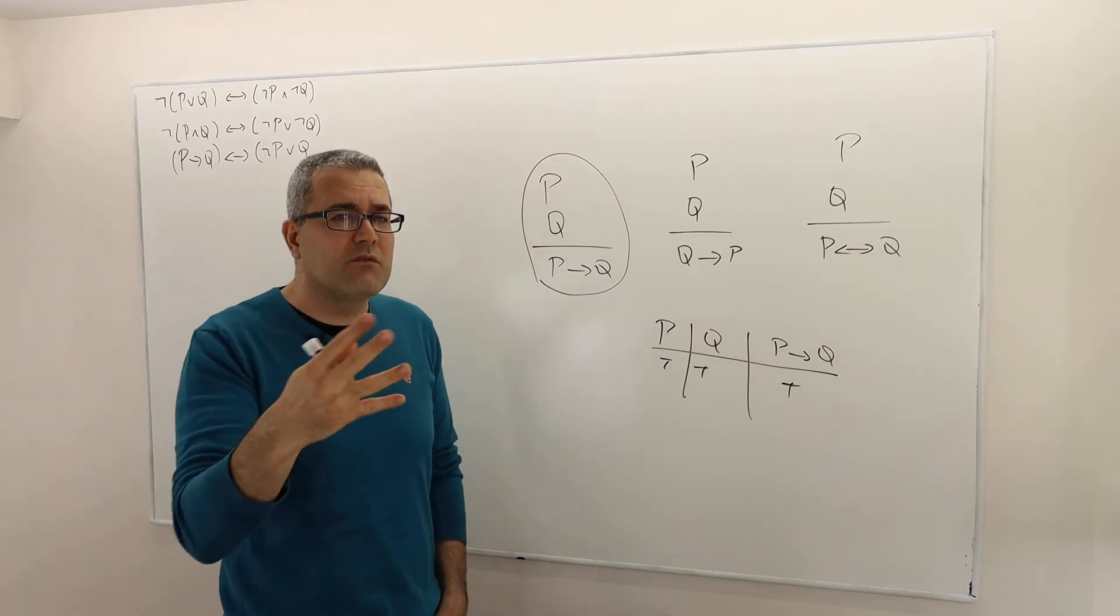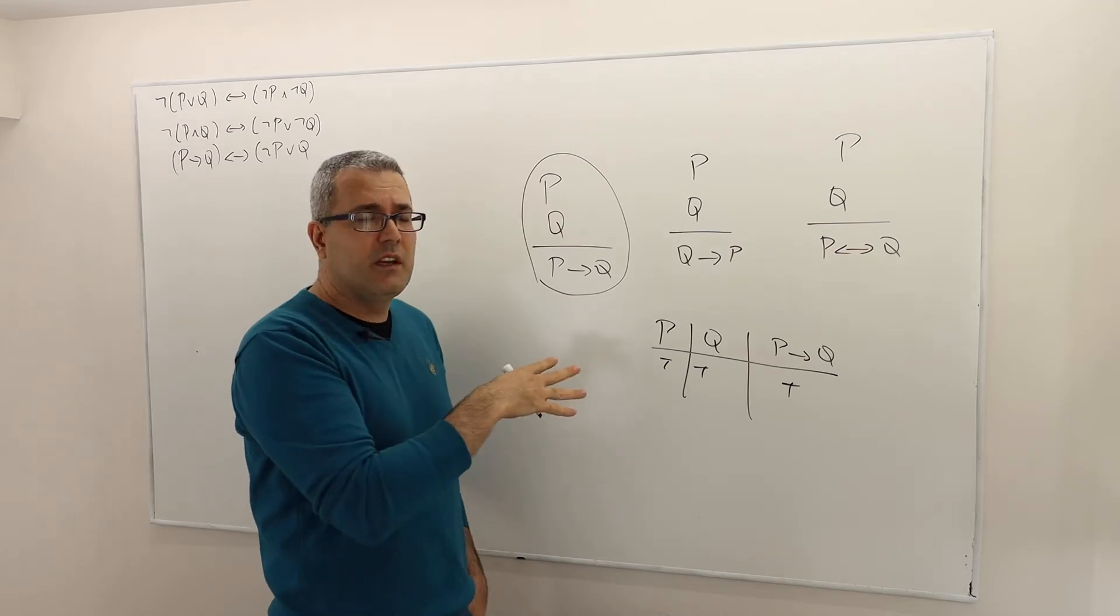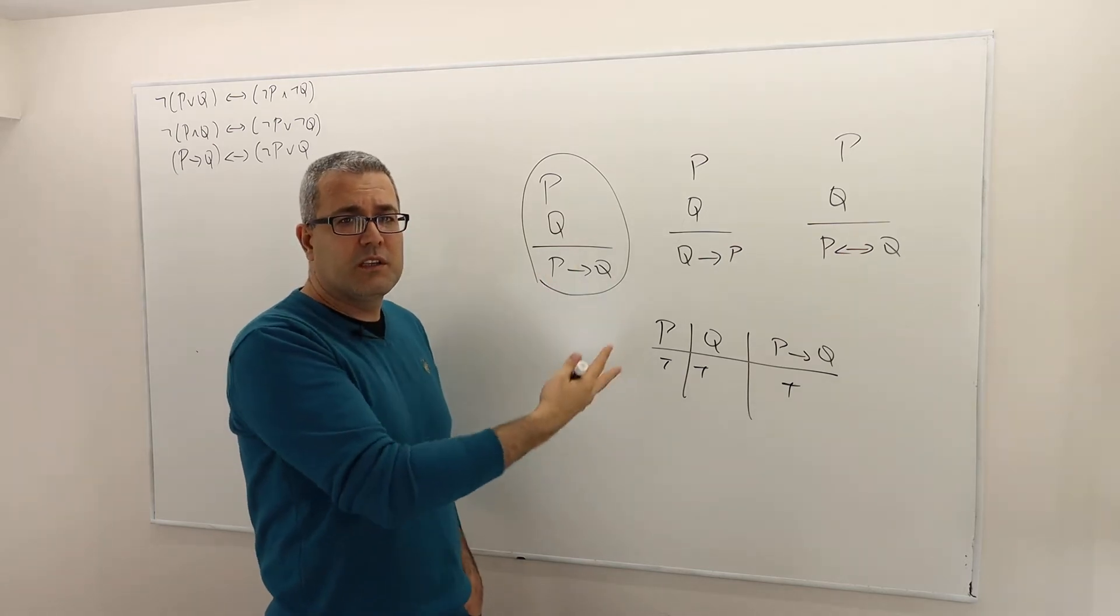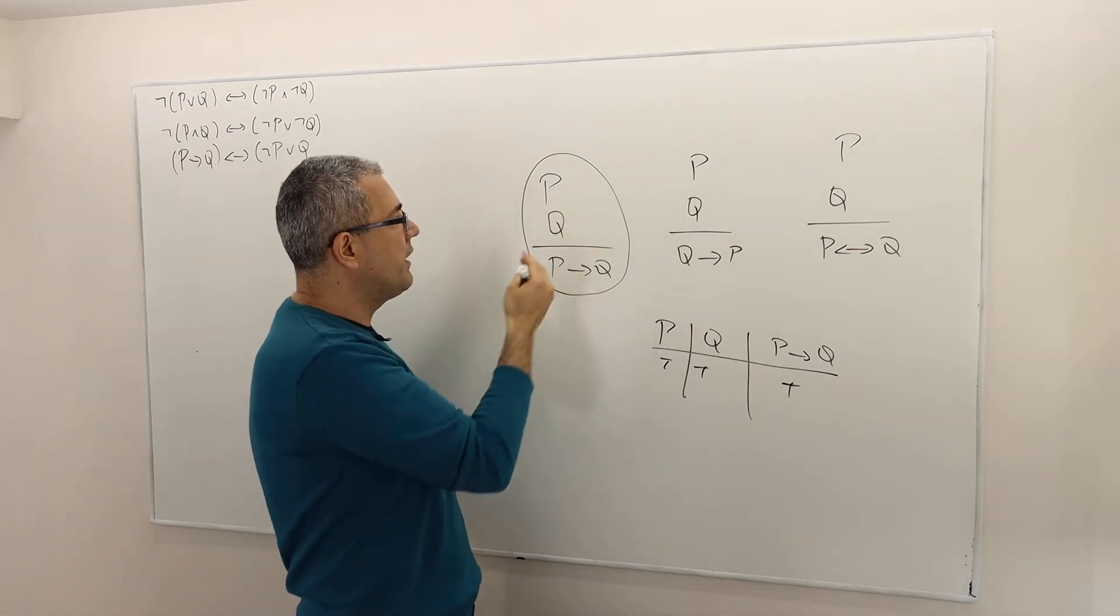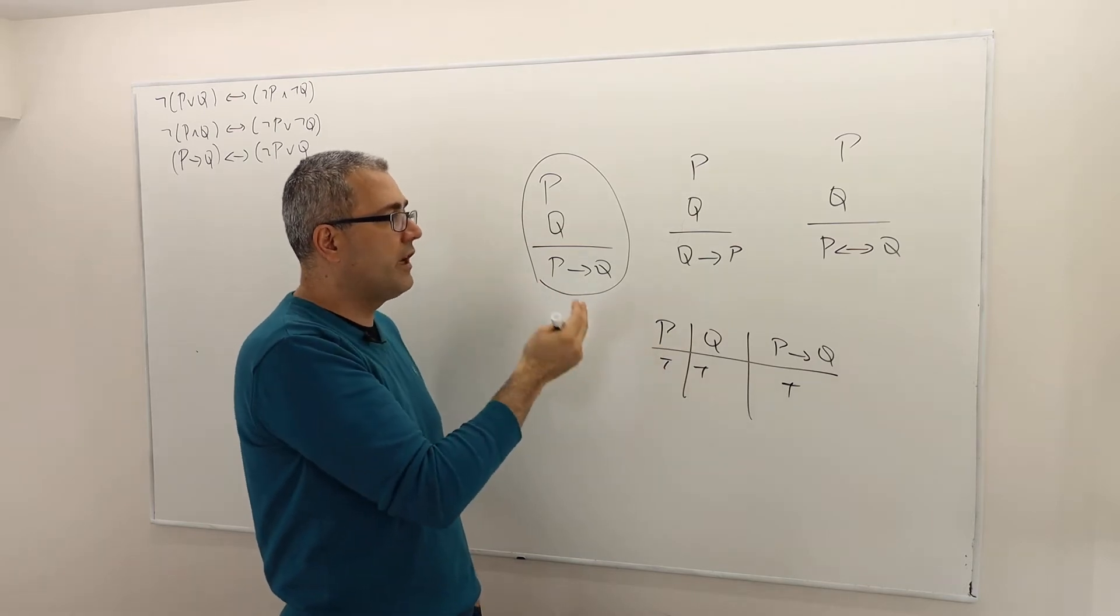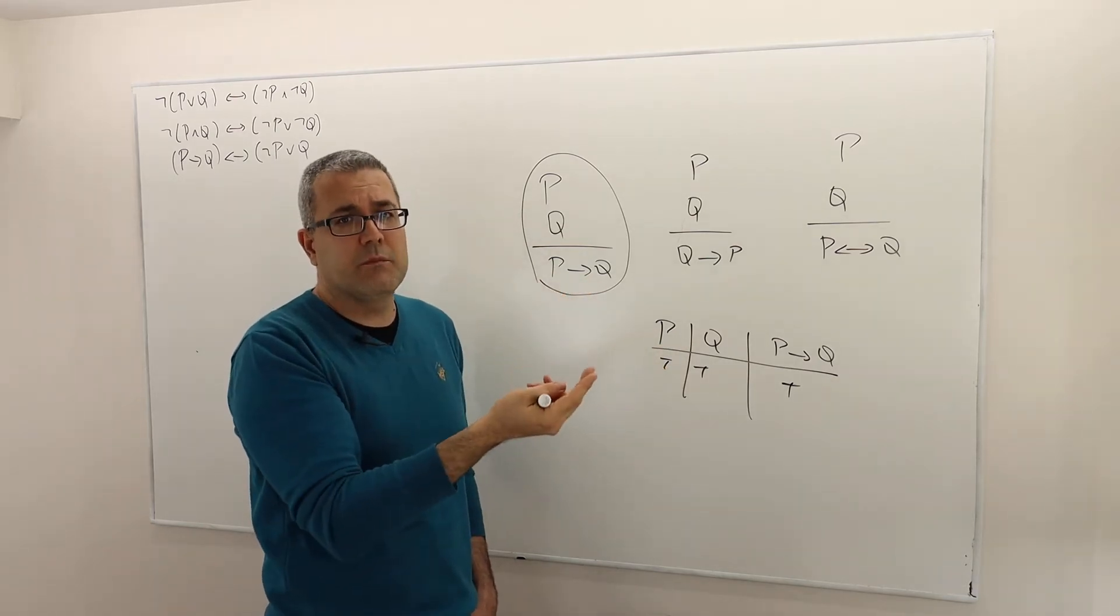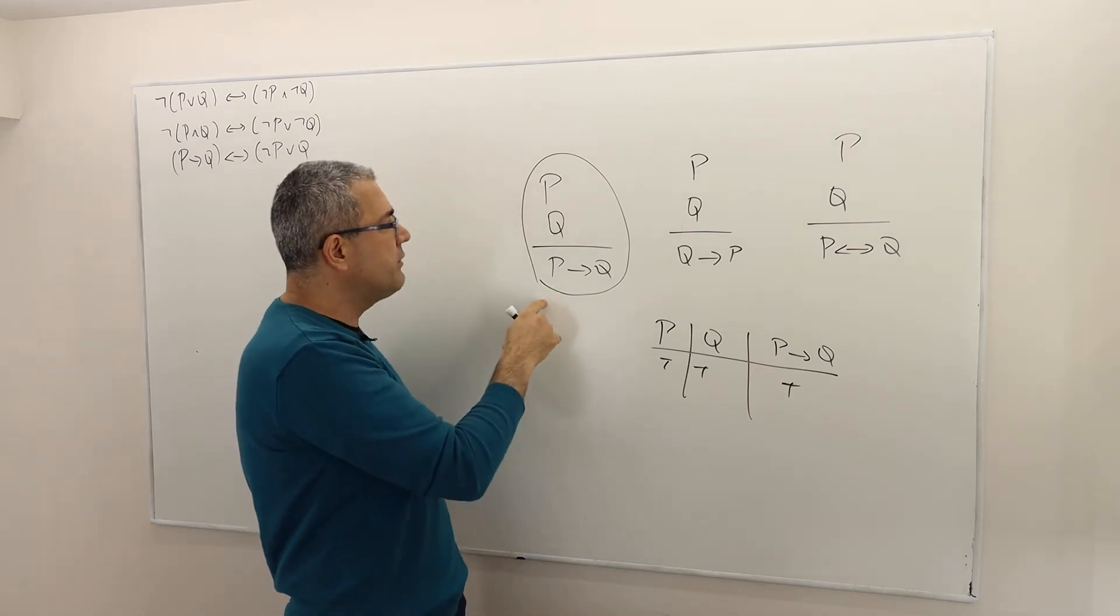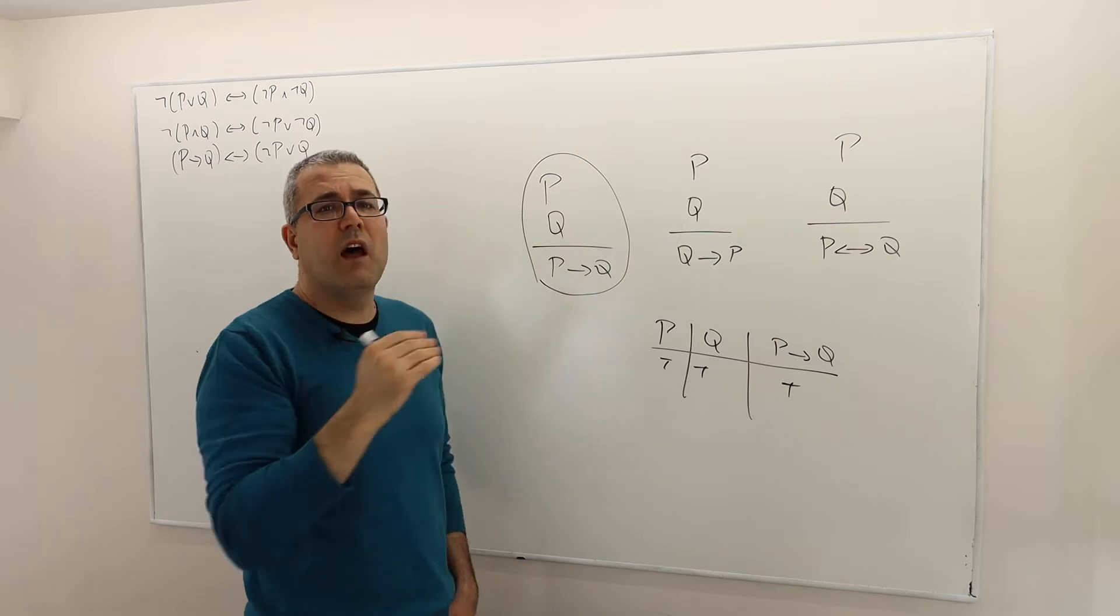But once again, we're not really interested in propositional logic in the meaning of those statements. We are just interested in their truth values. And so if P and Q are true statements, then this P implies Q is also a true statement.